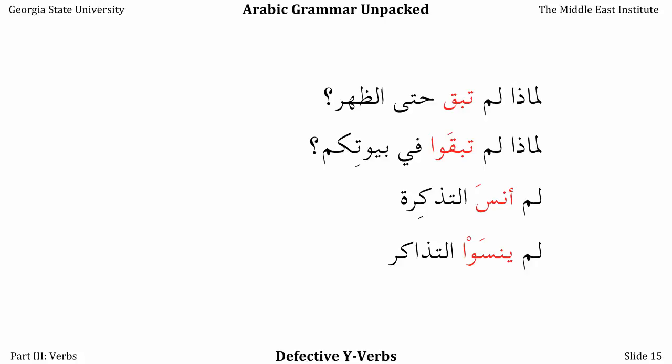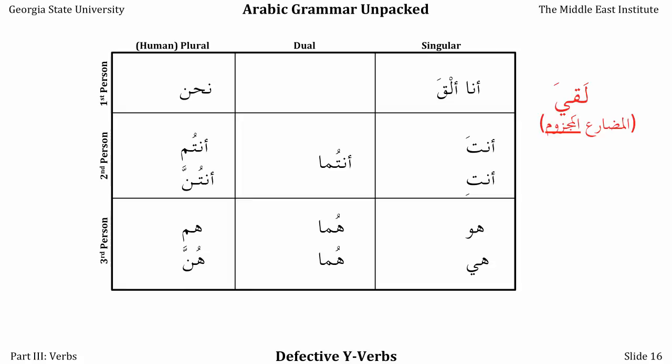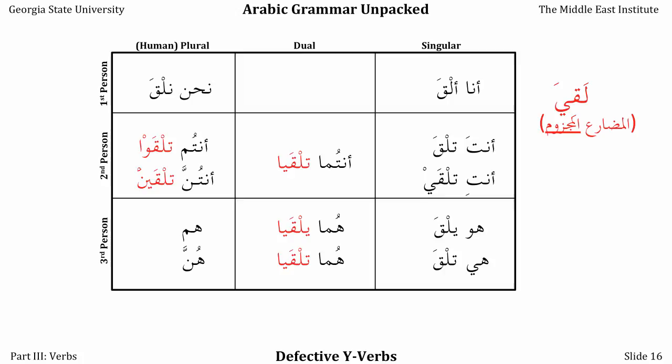If we look at the full conjugation in the majzoom, the missing alif maqsura changes into fatha, changing the spelling of the verbs entirely. The anti-form becomes talqa instead of talqayn. Yalqa, talqa. The dual forms, since they have long vowel suffixes, get to keep their last vowel, so it's much easier to identify the three-letter root. The nahnu form suffers from the same problem as the other singular forms. When we go into the plural human forms, they keep their suffixes, so they're a little less difficult to understand — still challenging, but not nearly as challenging as the ana or nahnu forms.